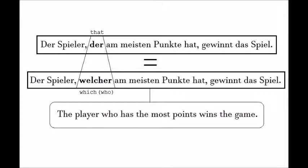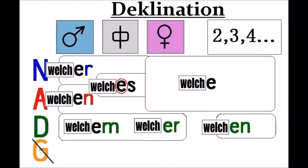Let's look at the declination table of the alternative form. There is one little exception with 'das' — it becomes 'welches,' not 'welchs.'